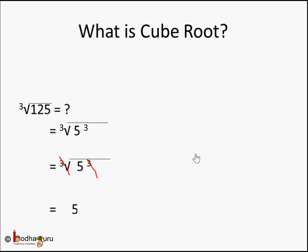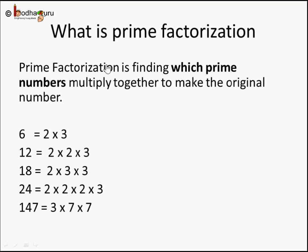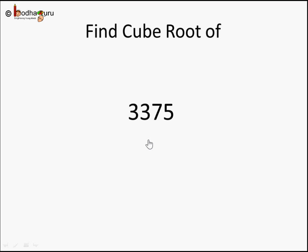That's what we learned in the last video. Now let's find the cube root using prime factorization. Prime factorization is a way of expressing a number as a product of prime numbers. For example, 6 can be represented as 2 into 3, where both 2 and 3 are prime numbers. Or 24 can be written as 2 into 2 into 2 into 3. Now we are going to use prime factorization to find the cube root of any given number.